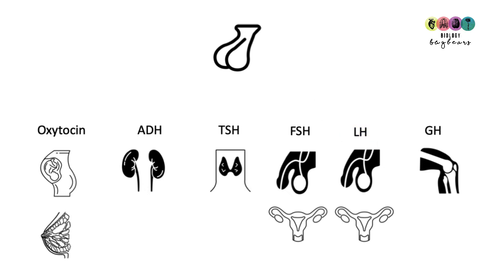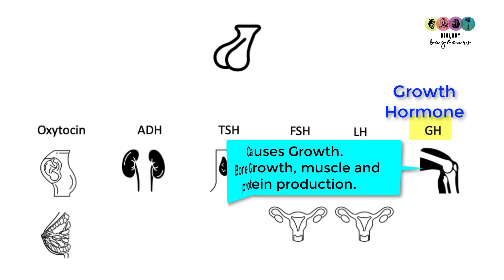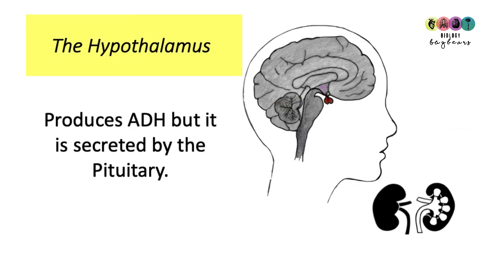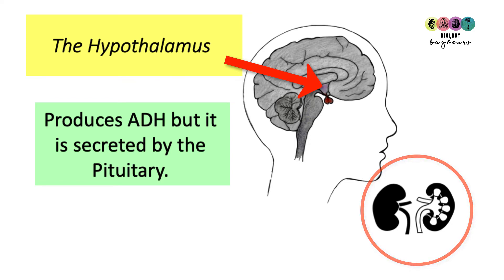One of the most important hormones produced by the pituitary gland is growth hormone. It stimulates growth — the production of new bone, new muscle, and proteins. The next gland is the hypothalamus, located just above the pituitary gland. It produces antidiuretic hormone, which is then sent to the pituitary gland and secreted from there, travelling to the kidneys.